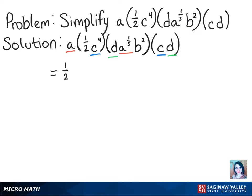So we'll have 1 half times A to the power of 3 thirds plus 1 third times B squared times C to the power of 4 plus 1 times D to the power of 1 plus 1.